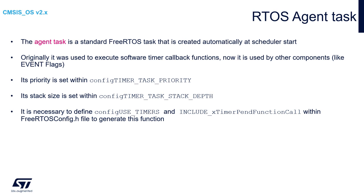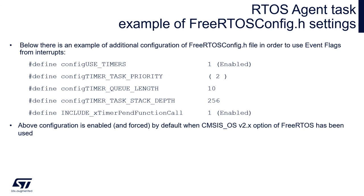An important component for both event flags and software timers is the RTOS agent task. Originally used to execute software timer callback functions, it is now also used for components like event flags. Its priority is set via configTIMER_TASK_PRIORITY and its stack size via configTIMER_TASK_STACK_DEPTH. It is necessary to define configUSE_TIMERS and include xTimerPendFunctionCall in FreeRTOSConfig.h to generate this task. The agent task priority must be set properly to allow it to execute among other active tasks; otherwise, event flags may not be serviced correctly.